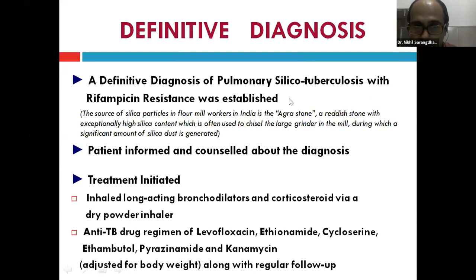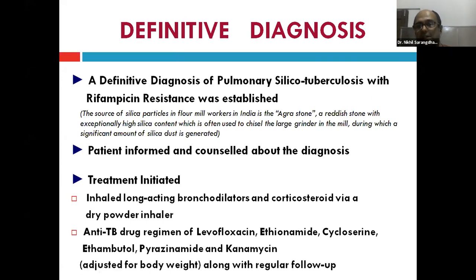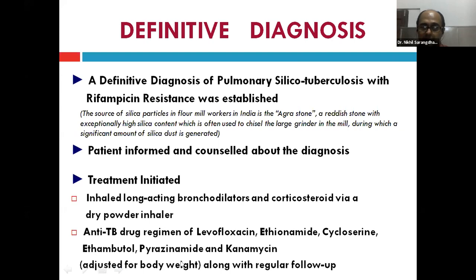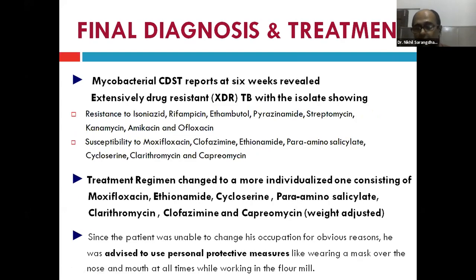The definitive diagnosis was pulmonary silico-tuberculosis with rifampicin resistance. The source of silica in flour mill workers in India is agra stone — a red stone with exceptionally high silica content used to chisel the large grinder — generating significant silica dust. Treatment was initiated for TB with RIF resistance using an appropriate anti-TB regimen adjusted for body weight, along with long-acting bronchodilators and corticosteroids by dry powder inhaler for bronchospasm.